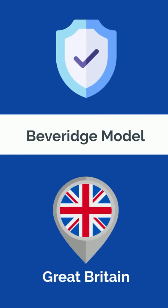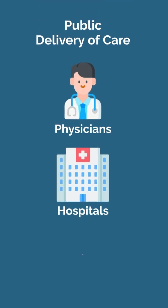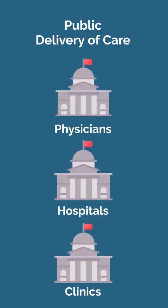In the Beveridge model, found in Great Britain, the government funds healthcare and there is public delivery of care. The physicians, hospitals, and clinics are all government owned and regulated.